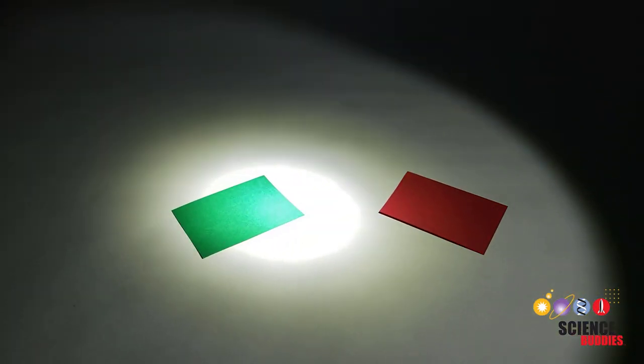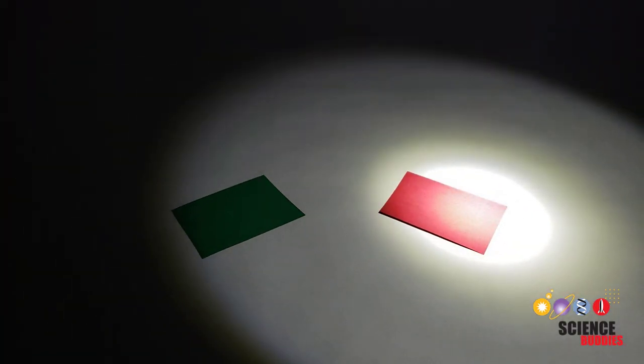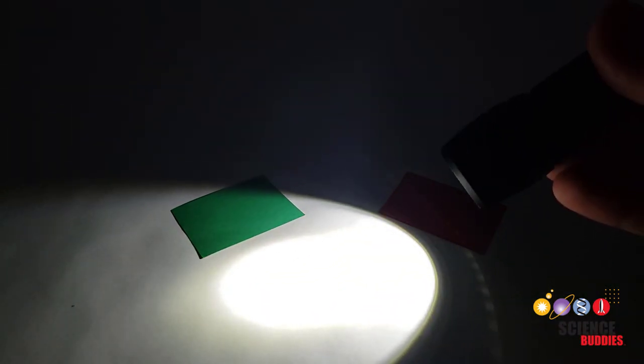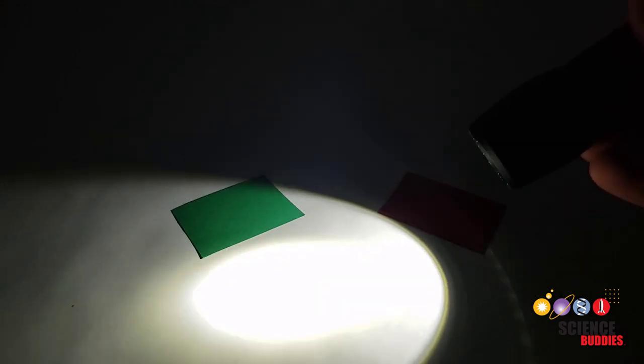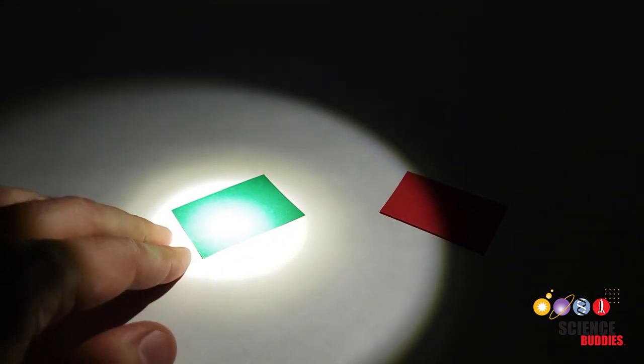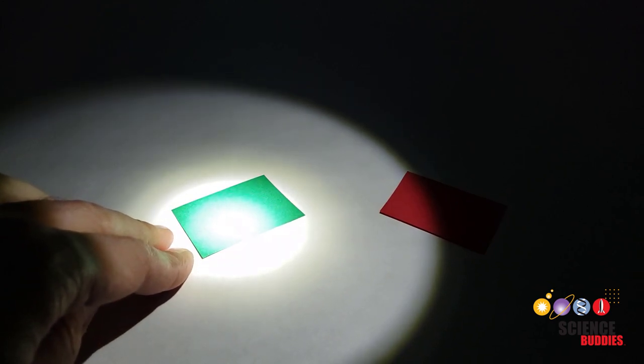To explain how the circuit works, first we need to talk about color. The light from this flashlight is white. White light is full spectrum, meaning it contains all the colors of the rainbow. When we shine it at a surface, the surface may reflect some colors and absorb others.